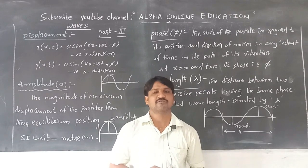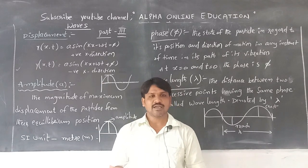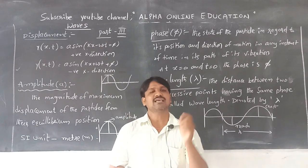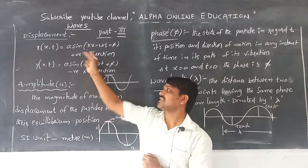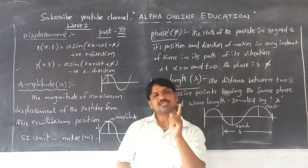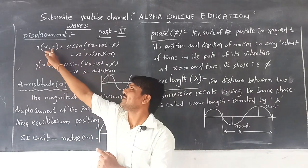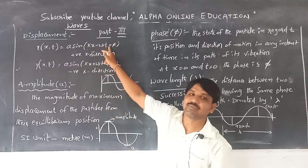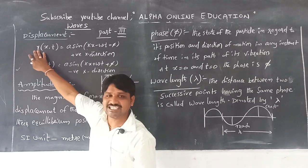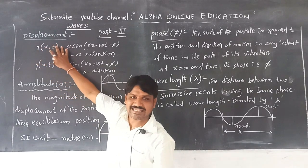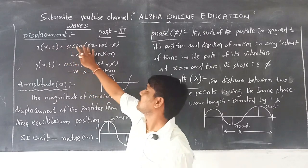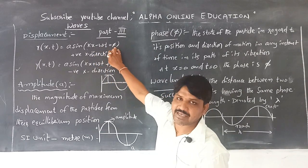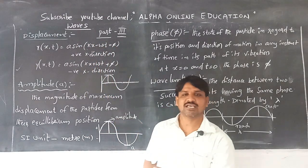A progressive wave means whenever particles are vibrating continuously with the same constant amplitude and travelling in a specified direction. Whenever the wave is travelling along the positive x-axis, the displacement relation is: y(x, t) = a sin(kx − ωt + φ). Here, y is the displacement, x is the position, t is the time, a is the amplitude, k is the angular wave number, ω is the angular frequency, and φ is the phase.